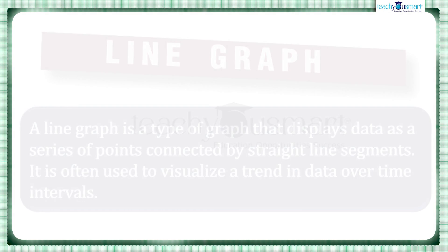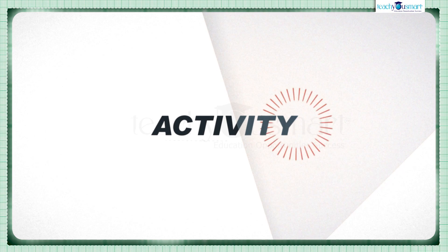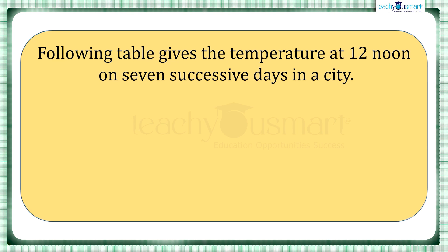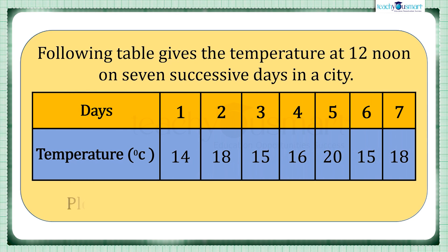Before winding up, let's check how much you understood by doing an activity. The following table gives the temperature at 12 noon on seven successive days in a city. Plot a graph to illustrate this information.